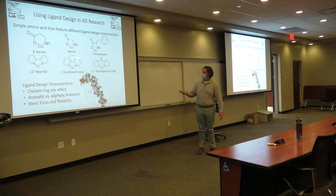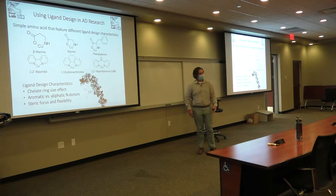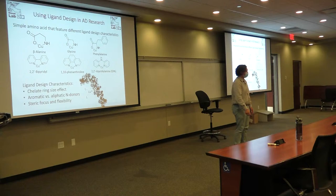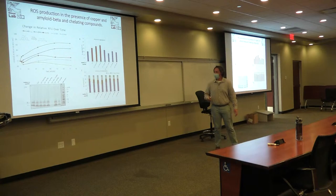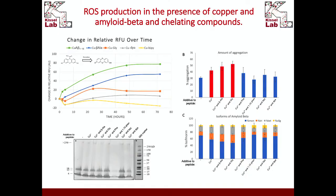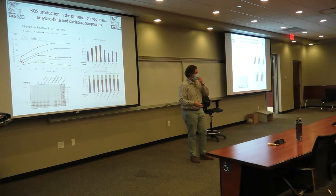We looked at some simple amino acids — the aliphatic amine donors — with different characteristics: six-membered versus five-membered chelate rings and some steric effects from a phenyl group. We also have aromatic amine donors, which are pyridine rings that are really good for coordinating copper. We did a hydrogen peroxide assay where we tracked relative fluorescence over time, using the 1-through-16 strand of amyloid beta peptide AB1-16, which contains the active site for copper, and we put copper and different ligands in there.